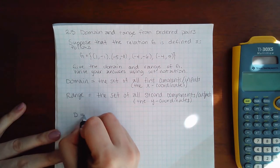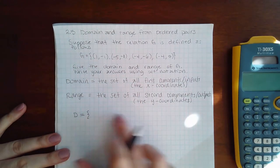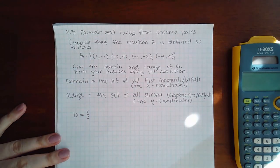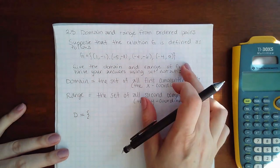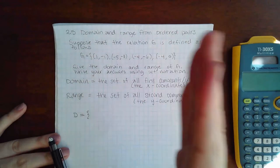To write the domain in set notation, you need braces and then your list. Since this is not a continuous function and it's literally just specific points, you write the answers as a list inside the braces.